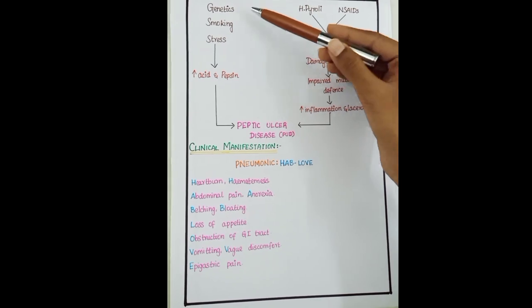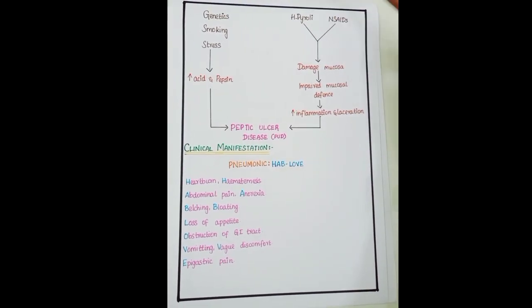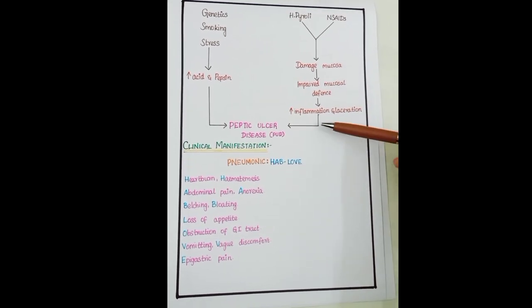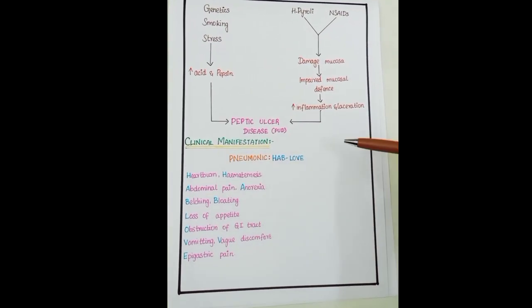The main causes are smoking and genetic stress, which increase acid and pepsin in the stomach. H. pylori bacteria and NSAIDs damage the mucosa and impair the mucosal defense, which results in increased inflammation and ulceration. This results in peptic ulcer disease.